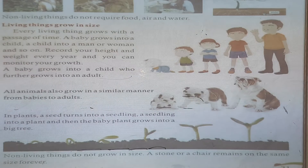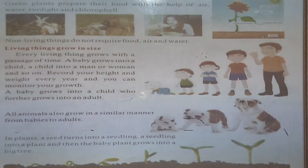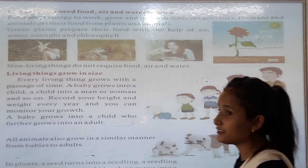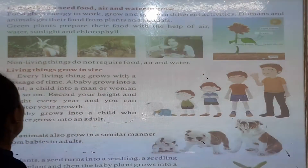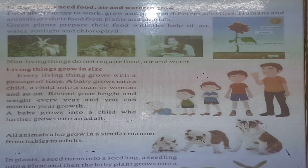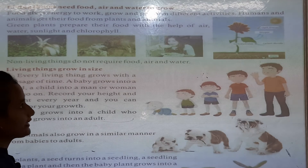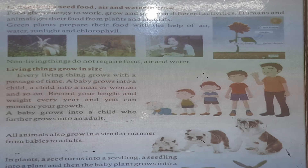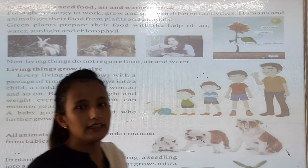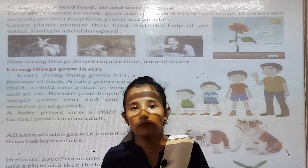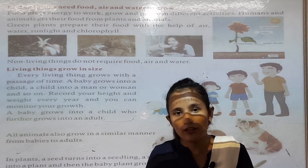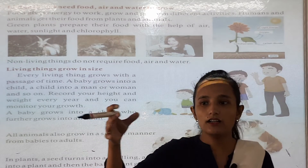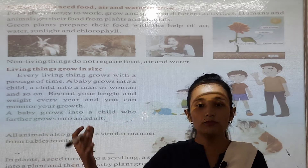Living things need food, air, and water to grow. Food gives energy to work and perform different activities. Human beings and animals get their food from plants and animals. For example, we get milk from cow, and meat from sheep.